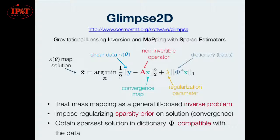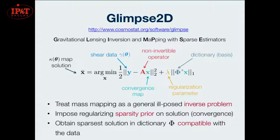To dive in a bit more to the details: in this equation, Y would be our shear data. X is the convergence map we're looking for that minimizes this entire expression. A is some non-invertible operator that takes convergence — it's kind of like the inverse of Kaiser-Squires — it takes your convergence back to the shear so you can figure out the residual and hope that that's small.